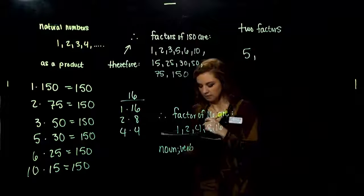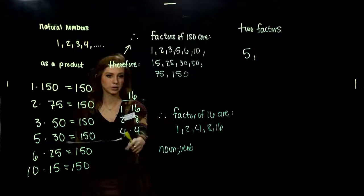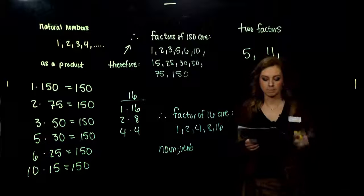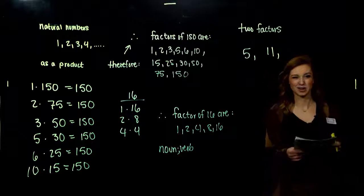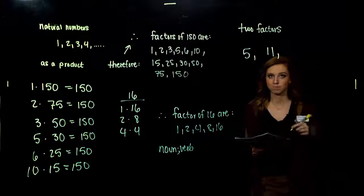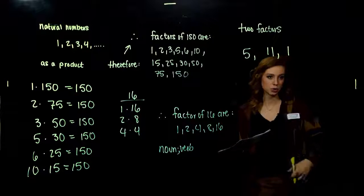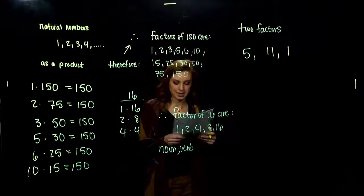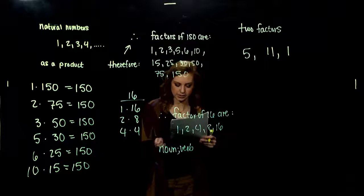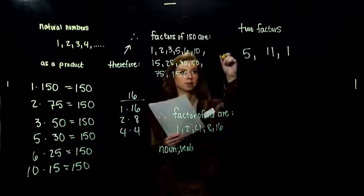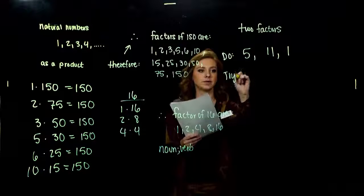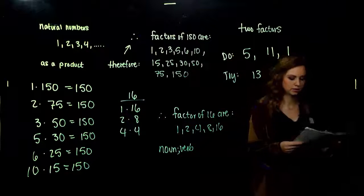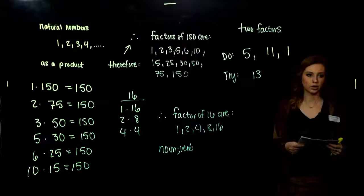Five is prime. Eight is not because we can break it up into four and two other factors. Eleven is prime. Sixteen, we've already broken it up and seen that there are more factors than just one and sixteen. And one. I can break that up into one and itself. It's also prime. So take a peek. Between 8, 6, 13, and 14, which of those numbers are prime? What are you thinking? Thirteen. I can only break that up into itself and the number one.